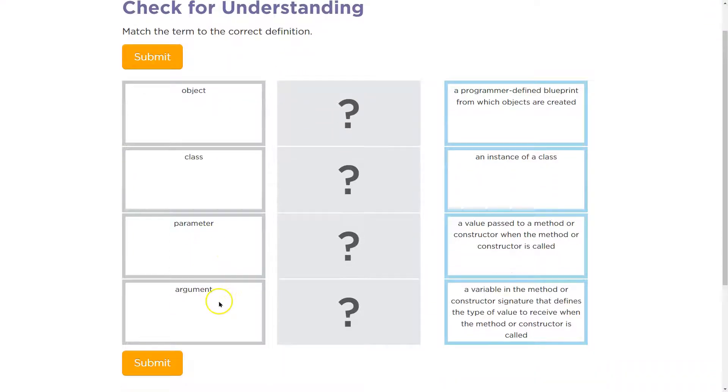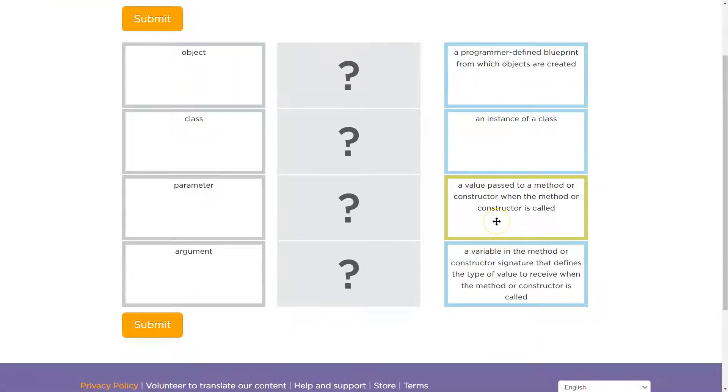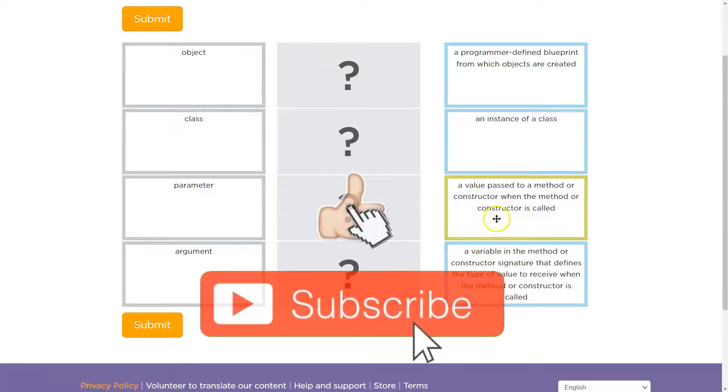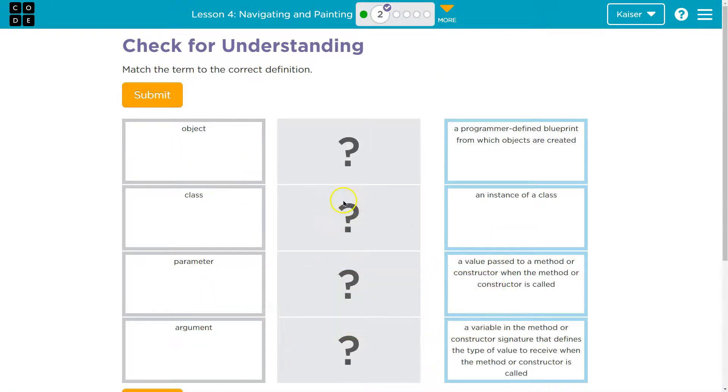All right, so we have object, class, parameter, and argument. Cool. So guys, keep in mind with this stuff, you want to read through it and take a guess first, and then don't hit submit yet. You should use your resources, because once you hit submit, it's submitted to your teacher, and you can't change it.